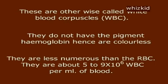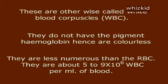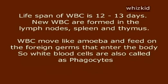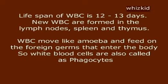Leukocytes are otherwise called white blood corpuscles or WBCs. They do not have the pigment hemoglobin, hence are colorless. They are less numerous than RBCs, at about 5 to 9 into 10 to the power of 6 WBCs per ml of blood. The lifespan of WBCs is 12 to 13 days.